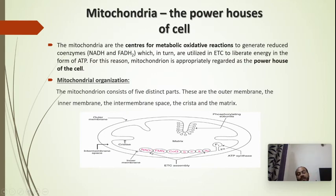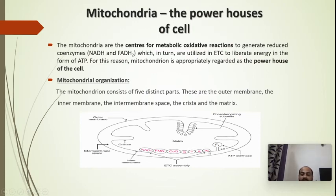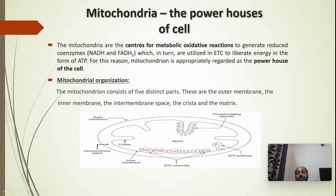For the electron transport chain to happen, there are five different protein complexes: complex 1, complex 2, complex 3, complex 4, and complex 5. All five protein complexes are situated on and over the inner mitochondrial membrane, and all five are responsible for the transfer of electrons from one complex to another to ultimately synthesize ATP.